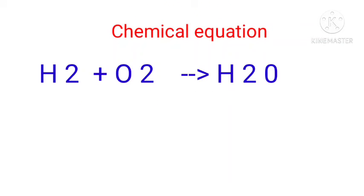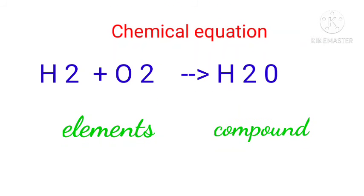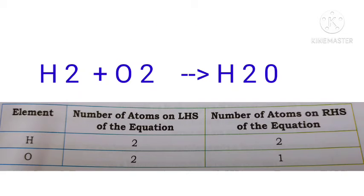Children please note that while writing the chemical equation for elements we have to write the atomicity with the symbols of elements, and for compounds always write the valency of the compound. So now the equation is H2 plus O2 gives H2O.